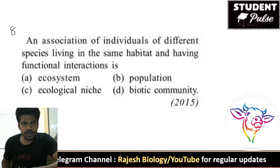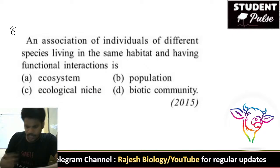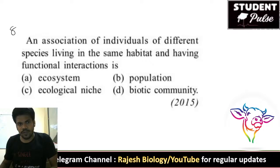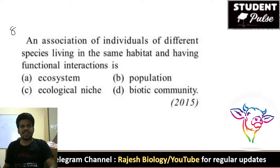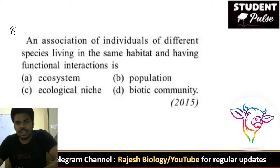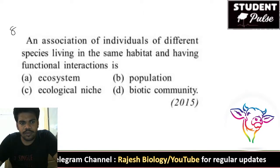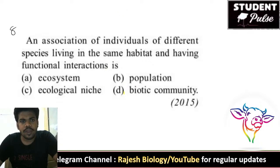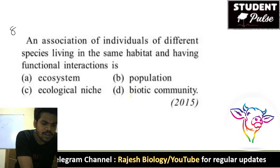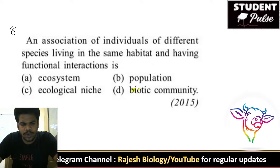Eighth question: an association of individuals of different species living in the same habitat and having functional interaction — what is this called? That is not an ecosystem, that is not a population. That is called a biotic community.